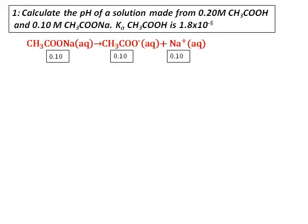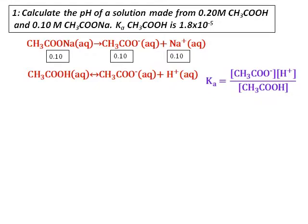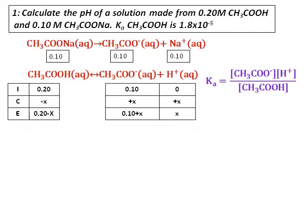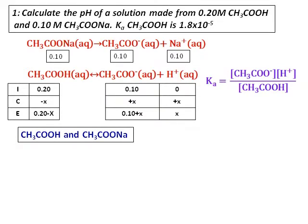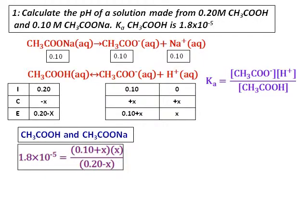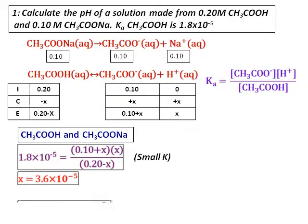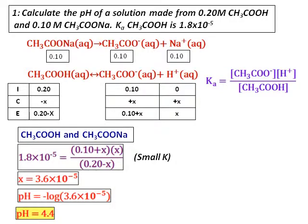The ionization of acetic acid is given — it is a weak acid. Therefore, we set up the ICE table. In the ICE table, the initial concentration of acetic acid is 0.20, and we have 0.10 as the initial concentration of acetate (CH₃COO⁻), which came from the sodium acetate. The concentration of hydrogen ion starts at 0. After setting up the ICE table and substituting equilibrium concentrations into the Ka equation, I calculate the value of x — the concentration of hydrogen ion — and get pH = 4.4.